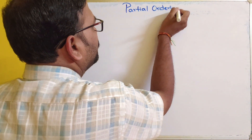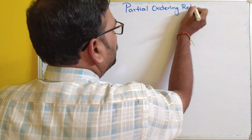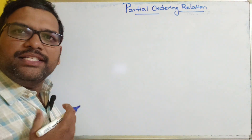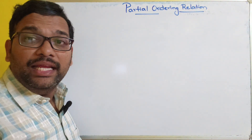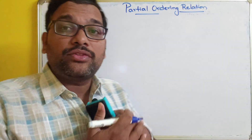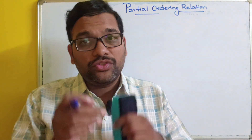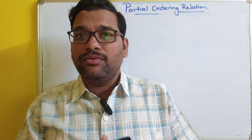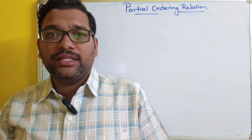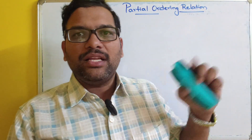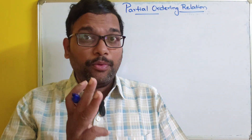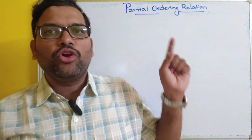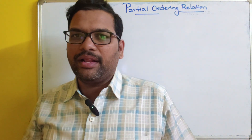Partial ordering relation. So when a relation is called as a partial ordering relation, this is similar to our equivalence relation. When we call it an equivalence relation, if any relation satisfies three properties — reflexive, symmetric, and transitive — then we call that relation an equivalence relation. Similarly, for partial ordering relation, if the relation satisfies three properties — reflexive, antisymmetric, and transitive — then we call that relation a partial ordering relation.